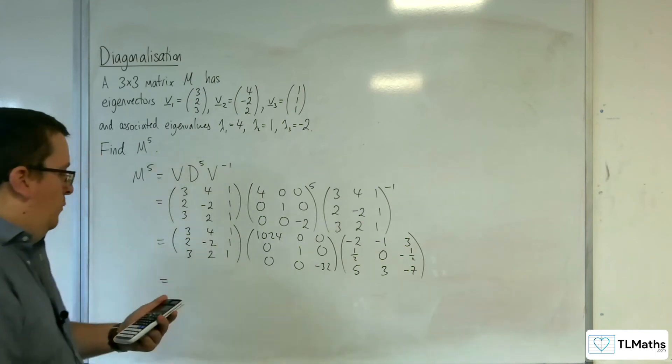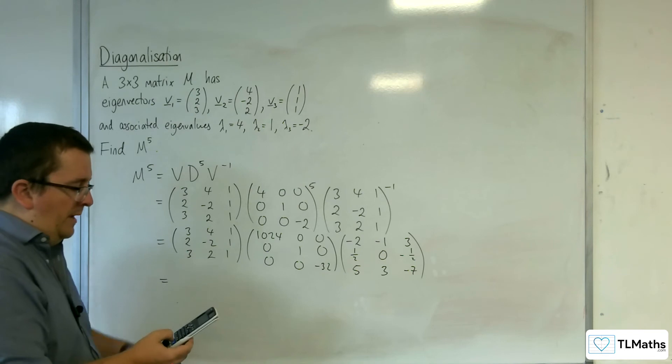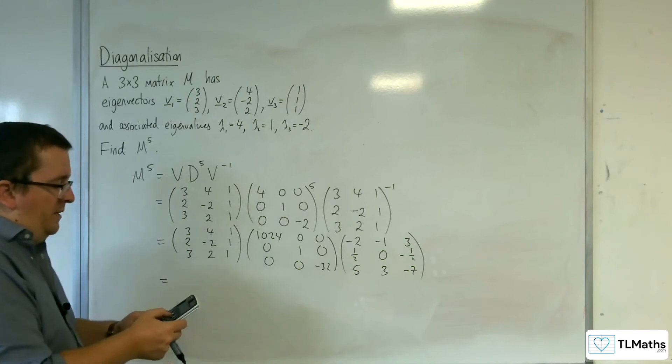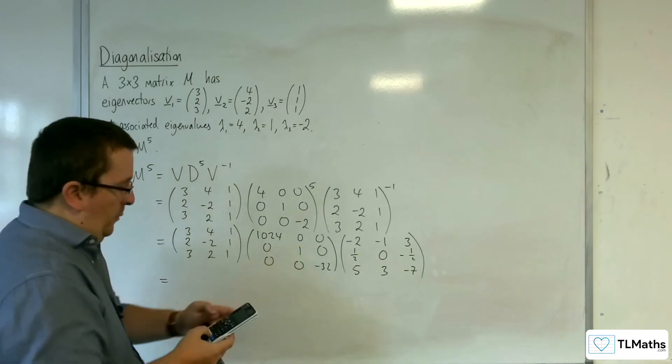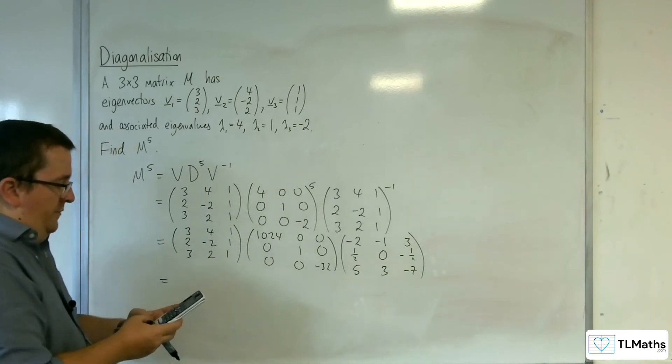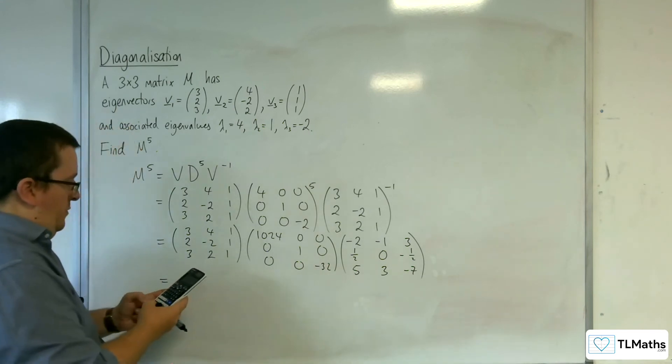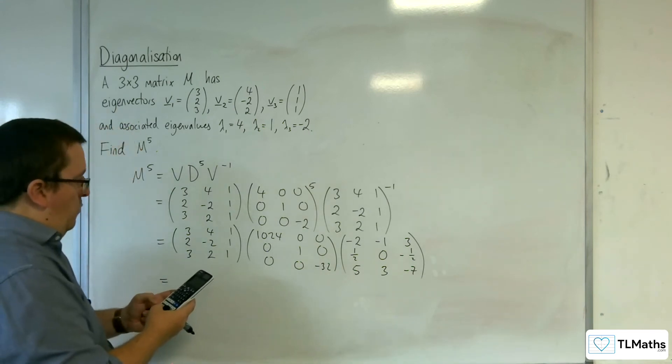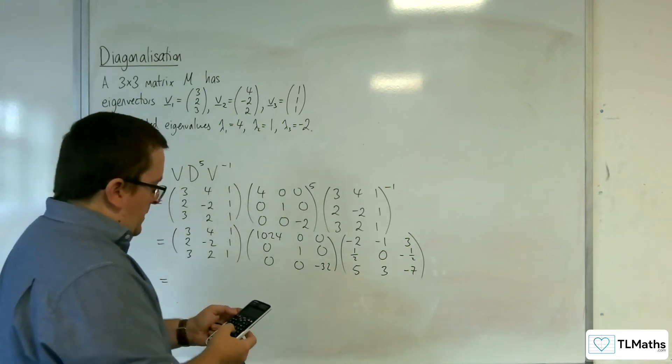So then we need to multiply these 3 matrices together. I'm just going to define another matrix B to be this one. So define matrix B, 3 rows, 3 columns: 1024, 0, 0; 0, 1, 0; 0, 0, minus 32.